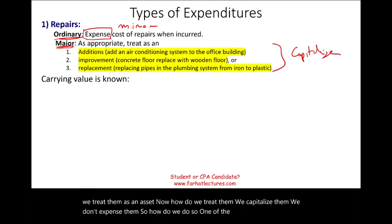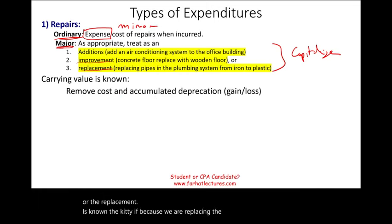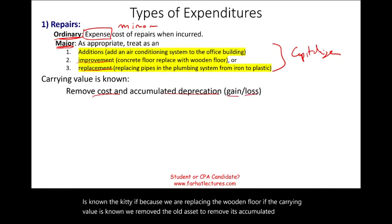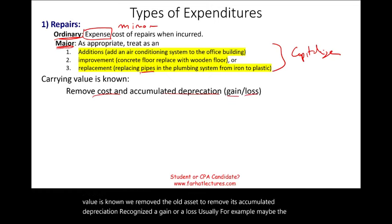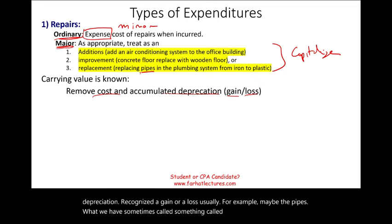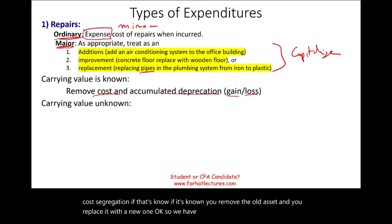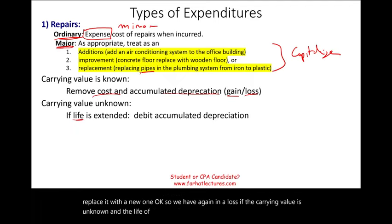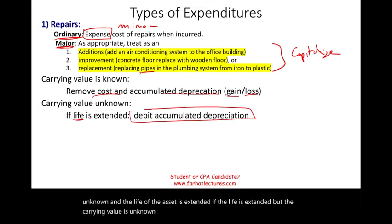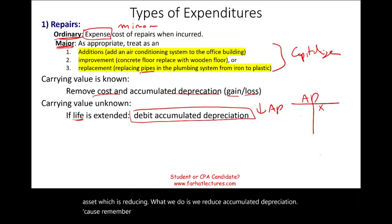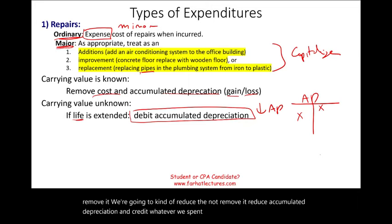How do we capitalize them? If the carrying value of the improvement or replacement is known — for example through cost segregation, where components like pipes are accounted for separately from the building — we remove the old asset, remove its accumulated depreciation, and recognize a gain or a loss, then replace it with the new one. If the carrying value is unknown and the life of the asset is extended, we debit accumulated depreciation of the main asset, reducing it, and credit whatever we spend.